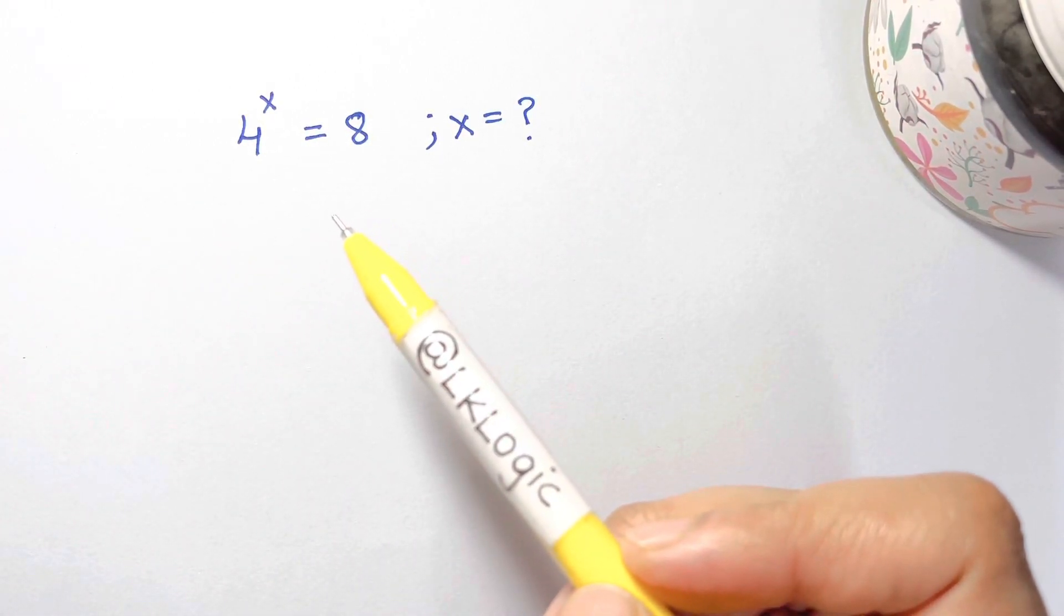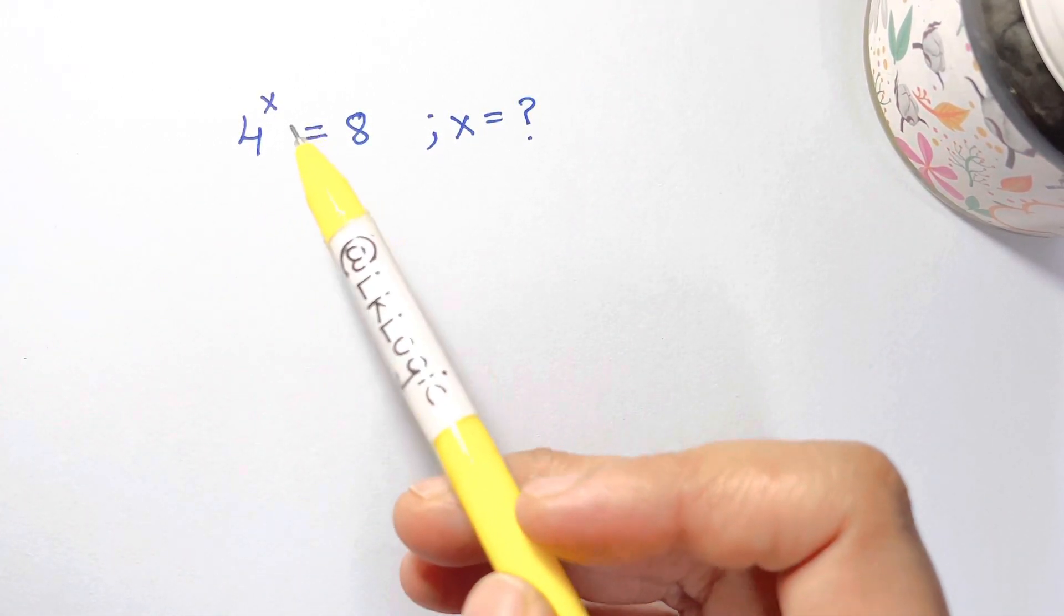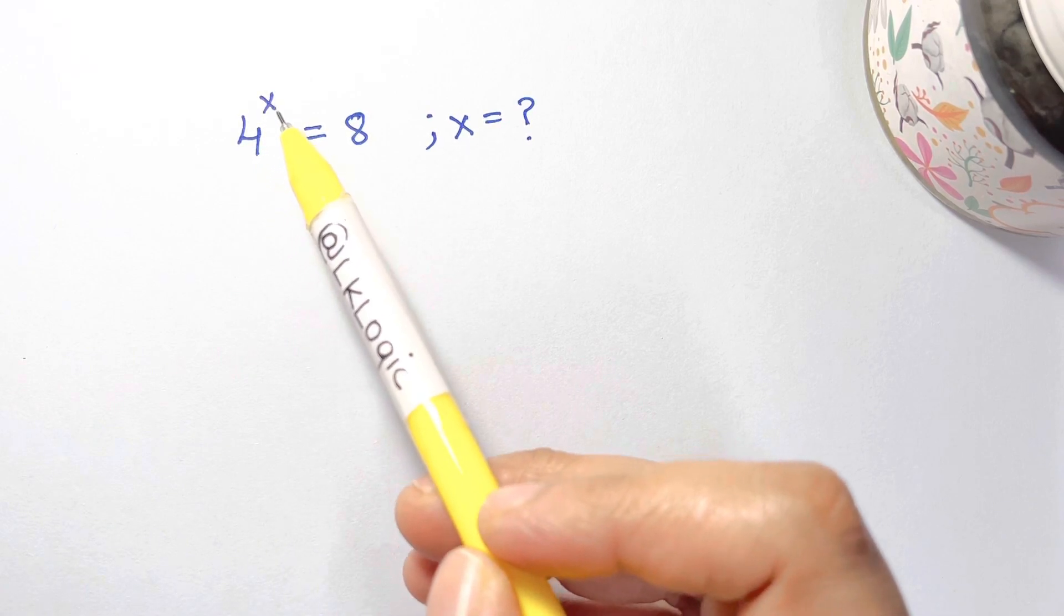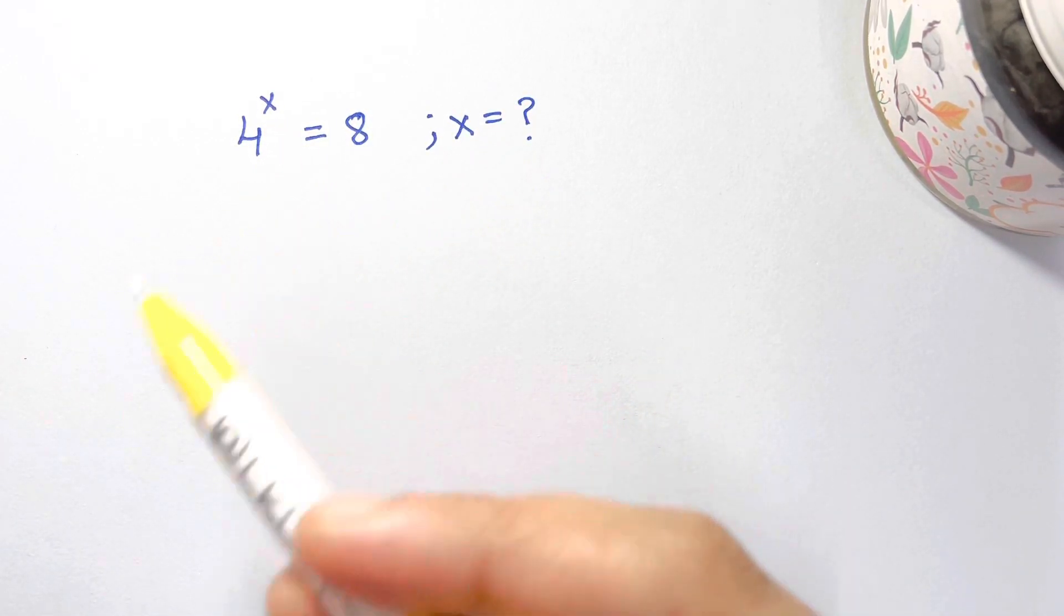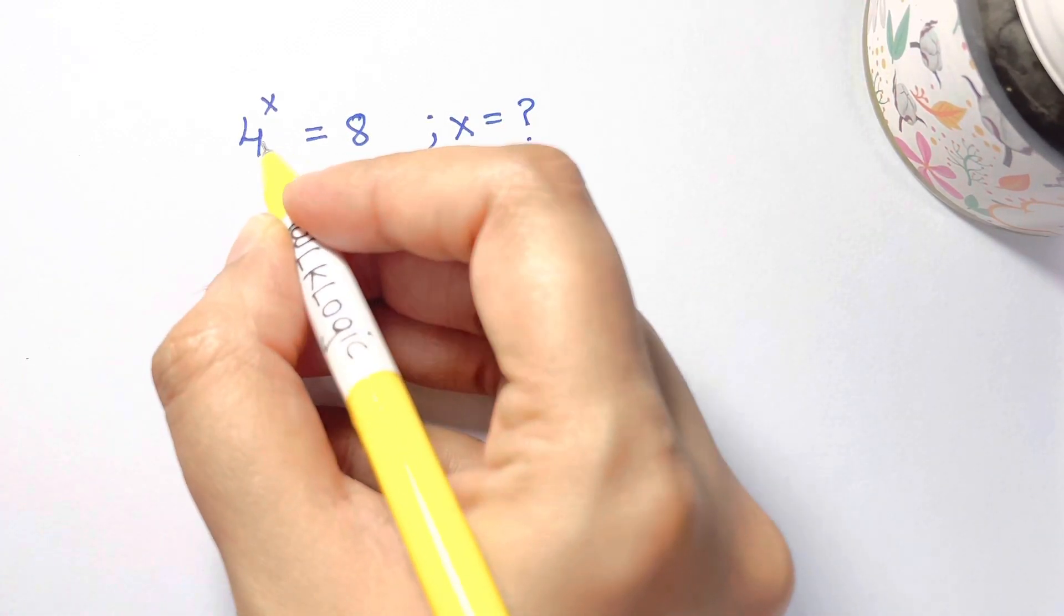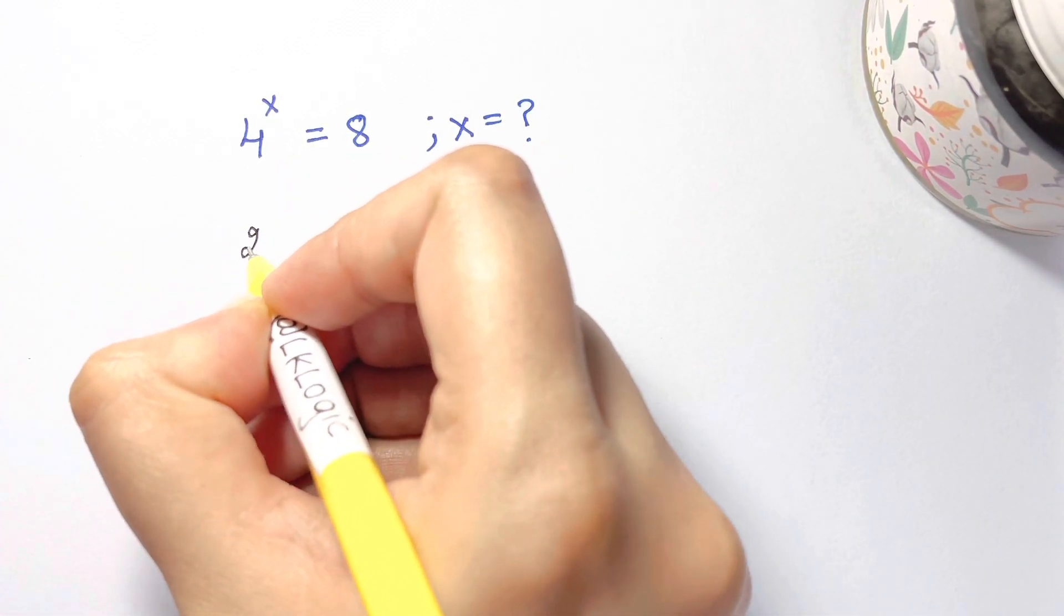Hi everyone. In this video we have a nice exponential equation: 4 to the power of x equals 8. What is the value of x? First, let's take 4 as 2 squared.